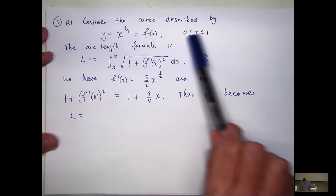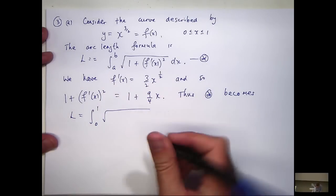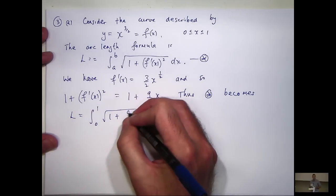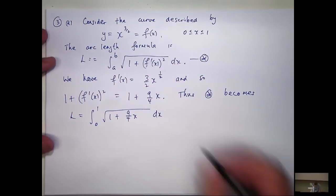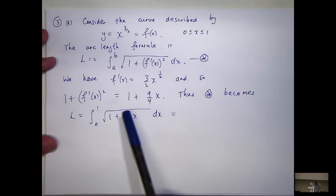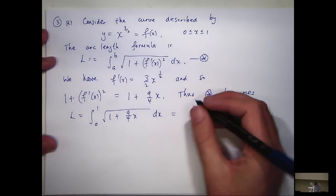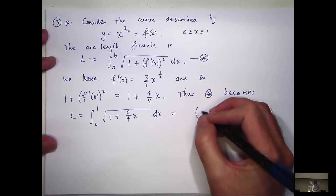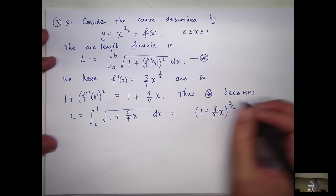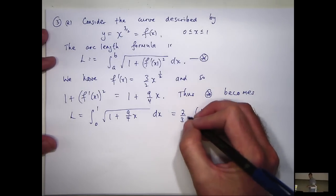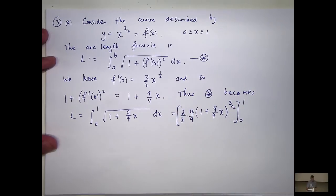So, our a and b are going to be the endpoints of our x interval. Then, this is 1 plus 9 on 4 times x dx. Now, to integrate this, it's just... The square root is going to go to a 3 on 2, and I just need to clean up by multiplication or division, I guess. So, it's going to go to a 3 on 2, so, I'll get something like that.